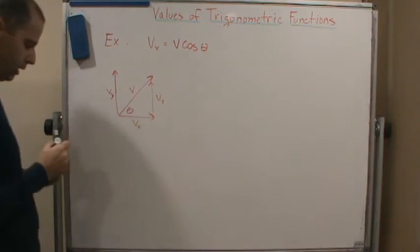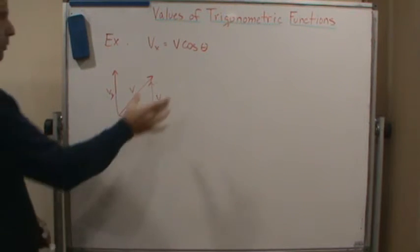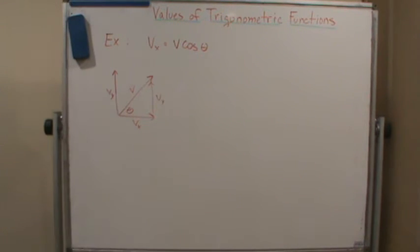...where this is the angle of launch. So this is the relationship they're giving you. The velocity in the x direction is given by that trigonometric function. It's the velocity v times the cosine of the angle.